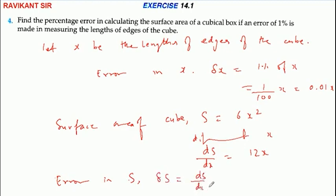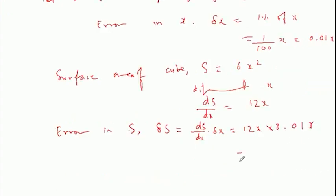dS by dx into delta x into 0.01x. Multiply here, 0.12 x square.